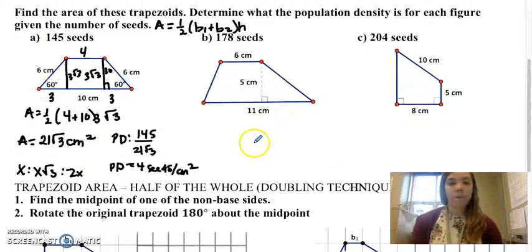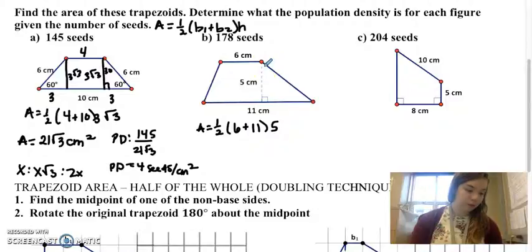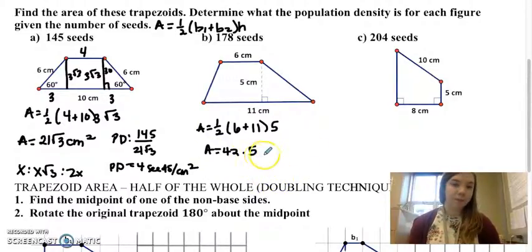On this one, I have my two bases and my height, so I'm not missing any information. So the area is one half base 1 plus base 2 times height. So 42.5 is what we get there. Square centimeters, don't forget to label.